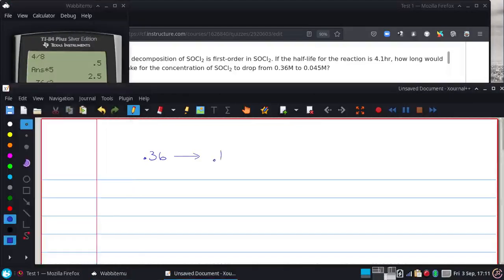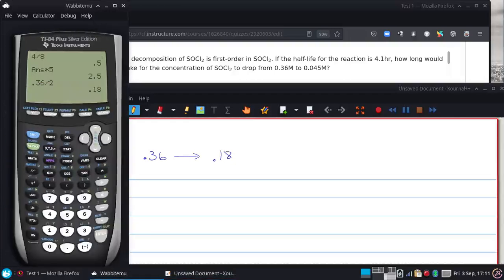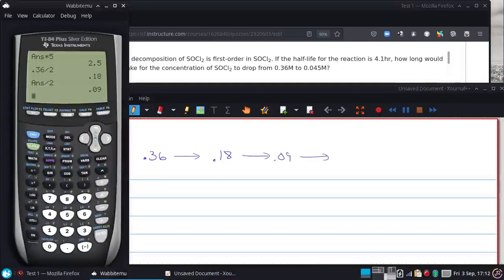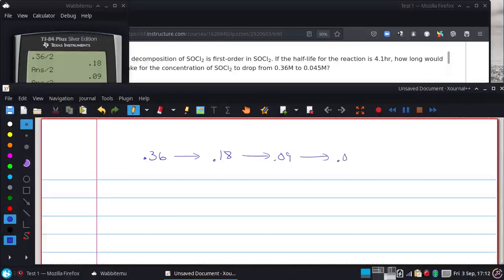So 0.36, and divide that in half, and I get 0.18. And divide that in half, and I get 0.09. And do that one more time, and I get that 0.045. So this, 0.045,